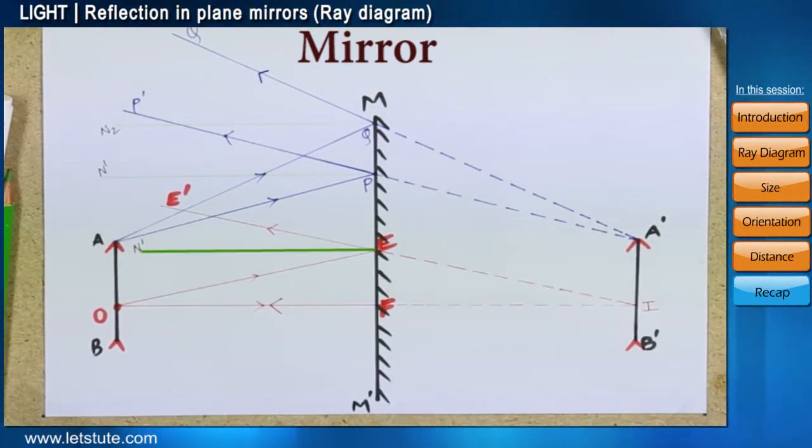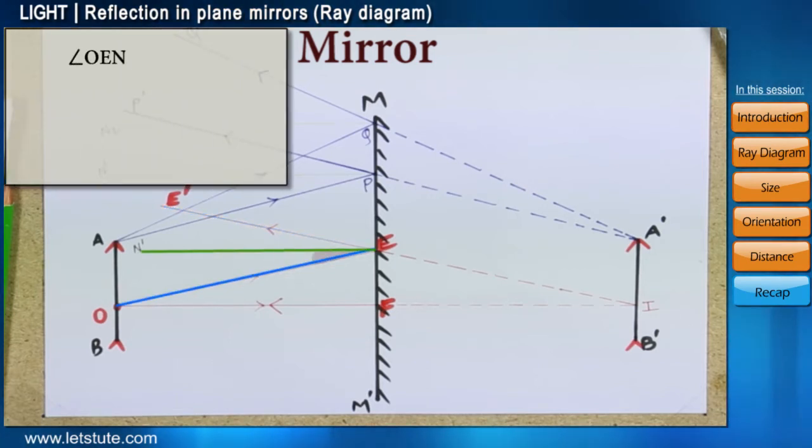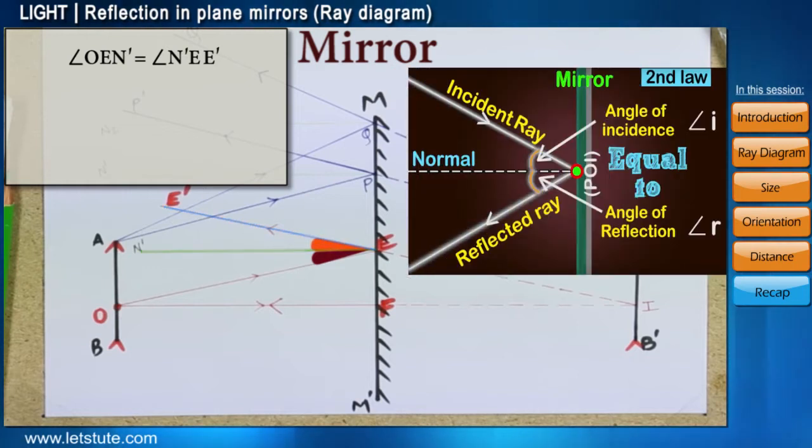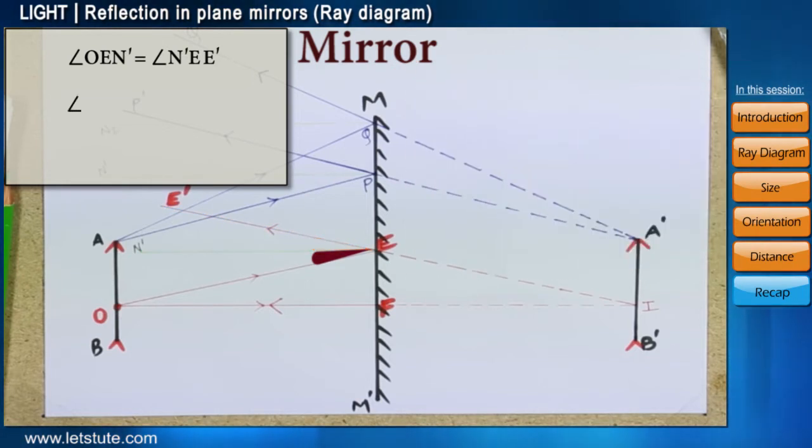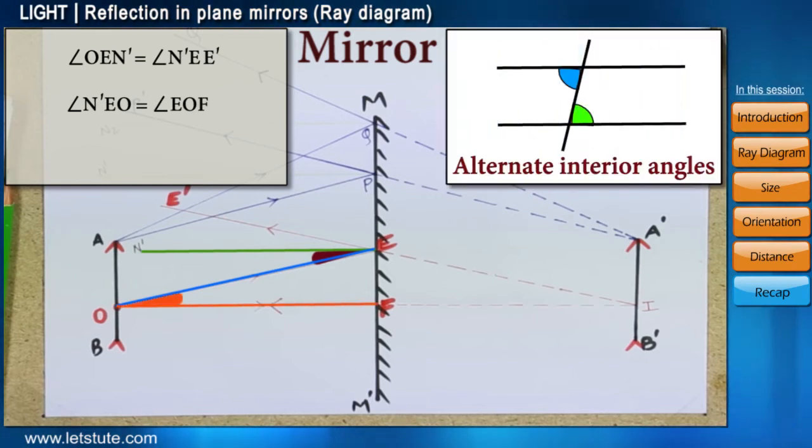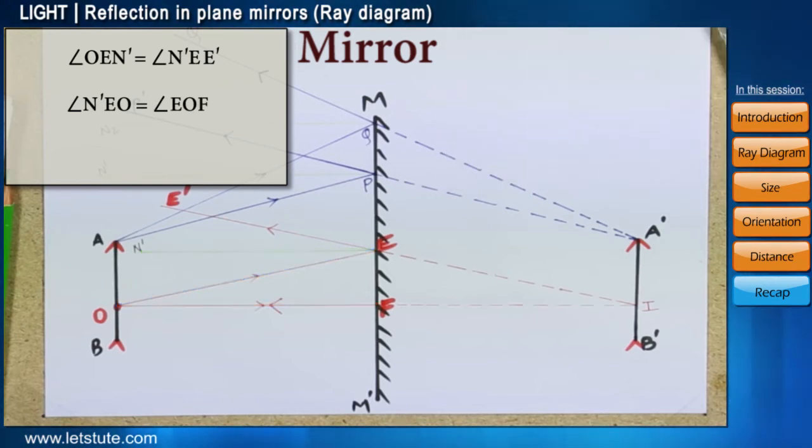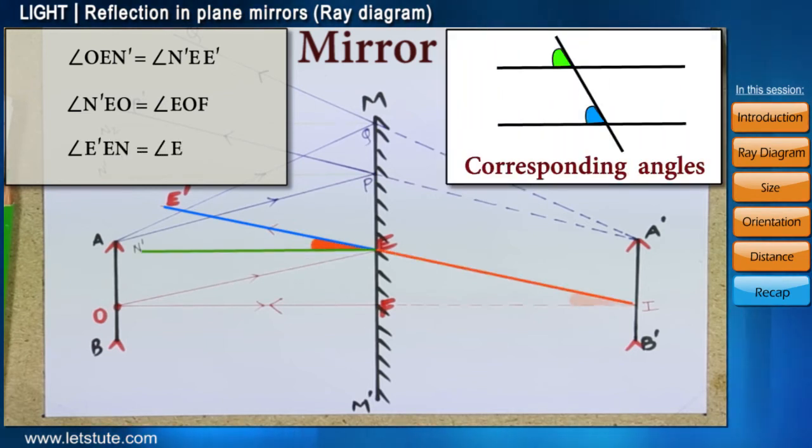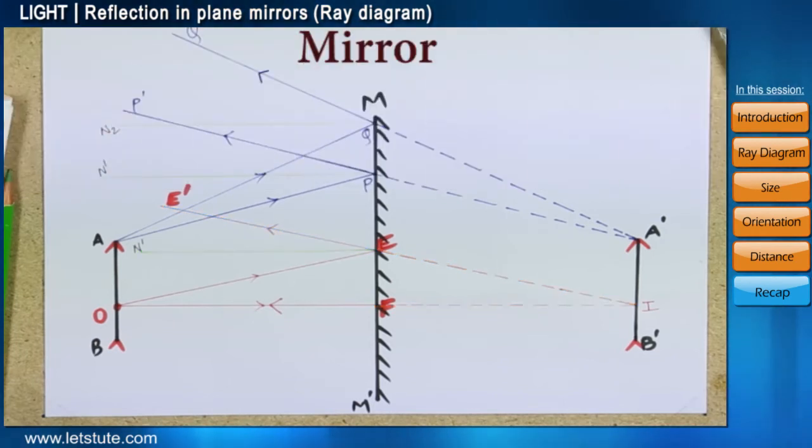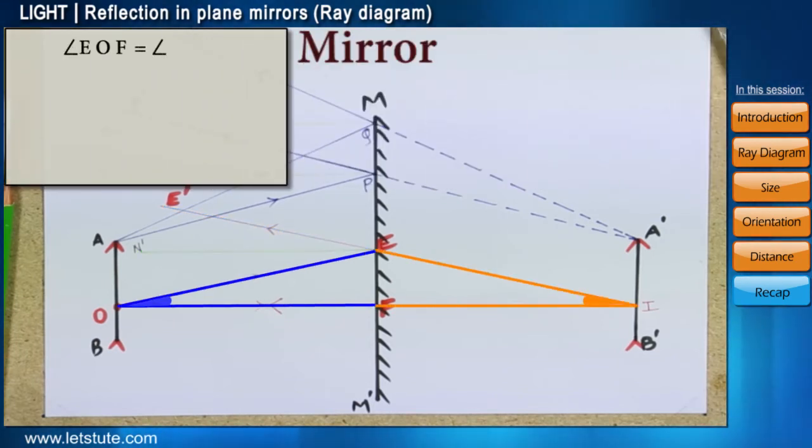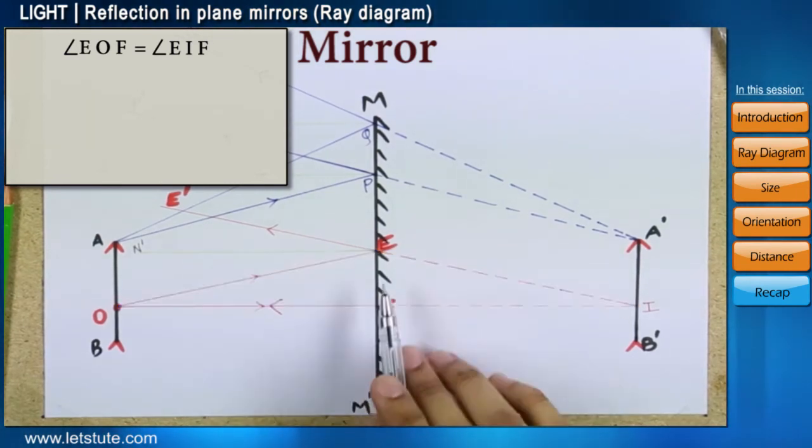Let both these rays be drawn back to meet at point I. Now, for the ray OE reflected as E, E dash, angle OE N1 is equal to angle N1E E dash following the laws of reflection. Angle N1 EO is equal to angle EOF as they are alternate angles. Angle E dash E N1 is equal to angle EIF as they are corresponding angles. Therefore, angle EOF is equal to angle EIF.